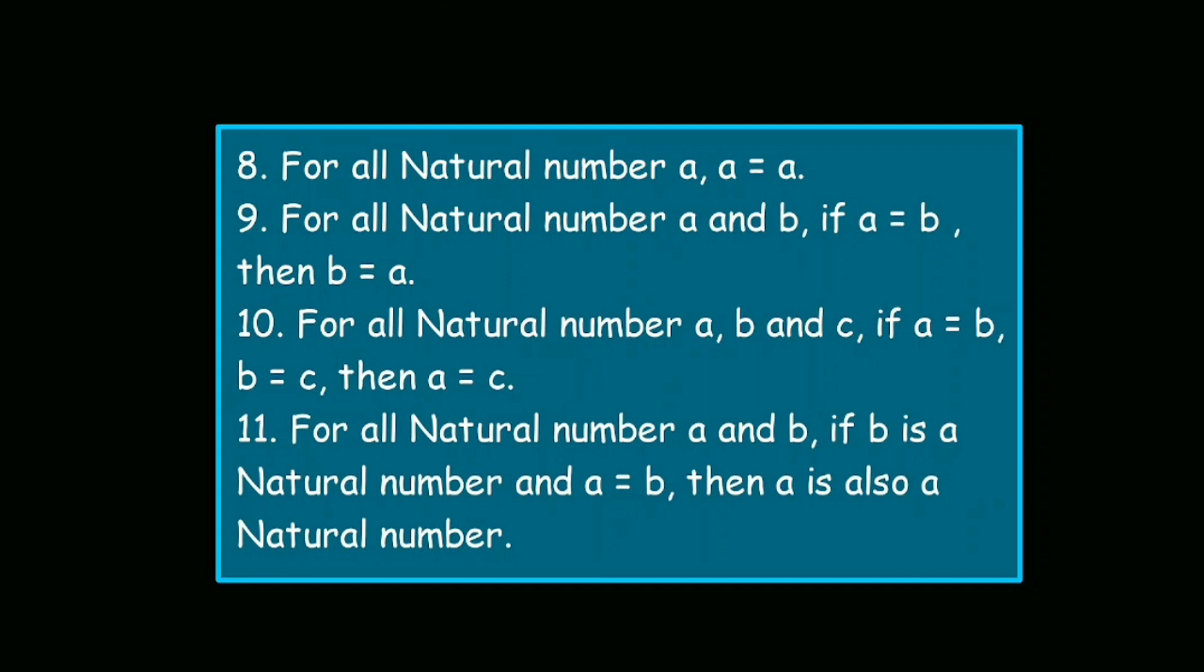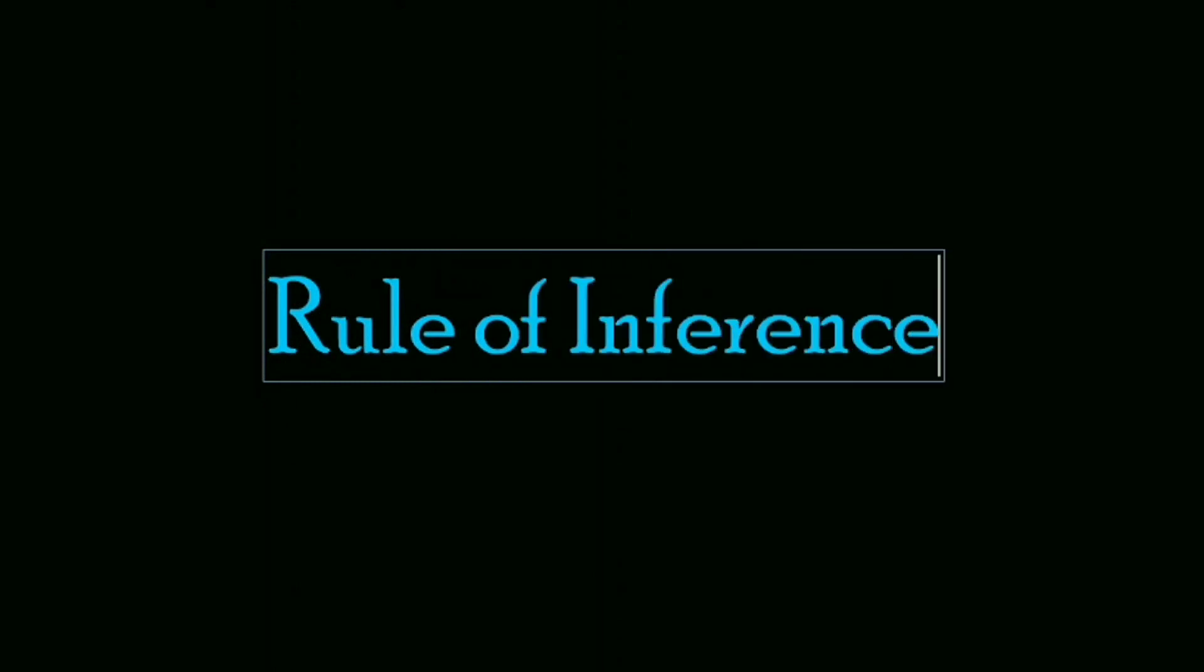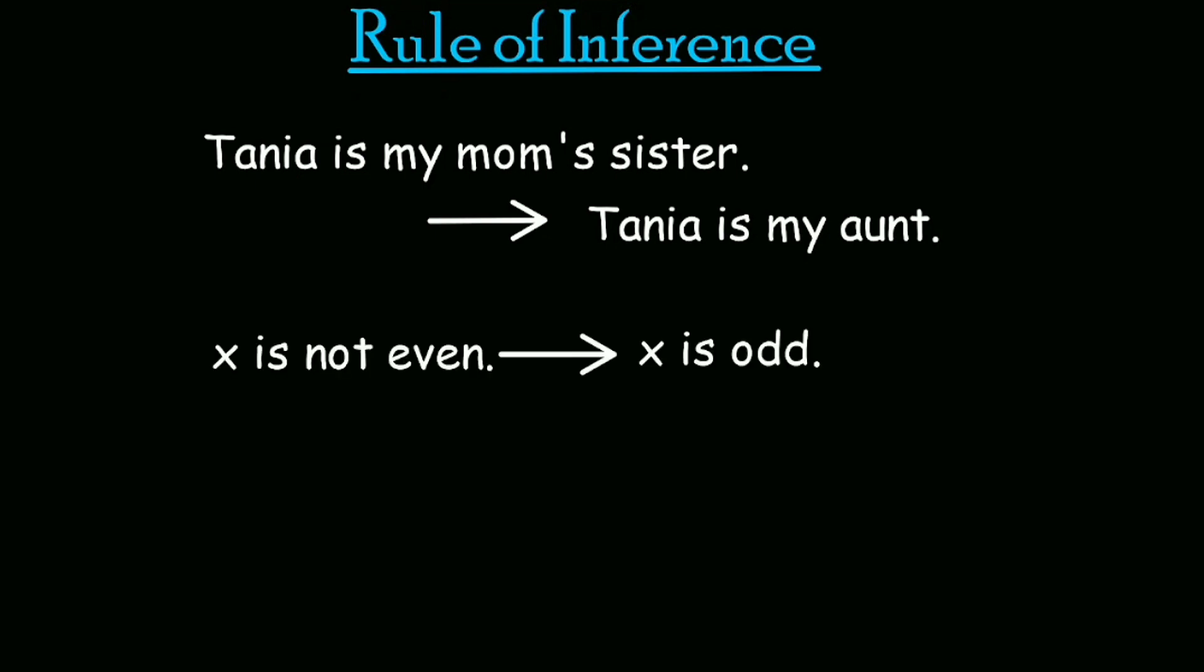The rule of inference could seem like a very fancy name, but the idea itself is very simple. As a matter of fact, we always use it in our day-to-day life without knowing about it. Rule of inference is about reaching a conclusion based on some given or known information. For example, if I tell you that Tanya is my mom's sister, you can easily conclude that Tanya is my aunt. Similarly, if I tell you that x is not an even number, you can very easily conclude that it has to be an odd number, right?